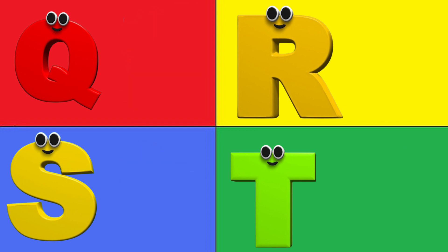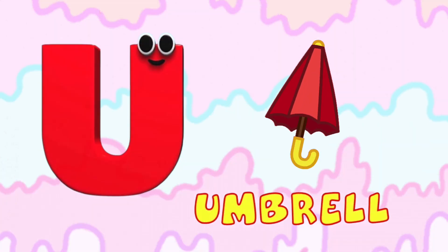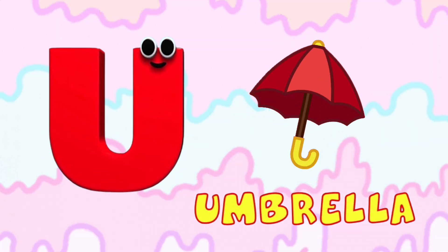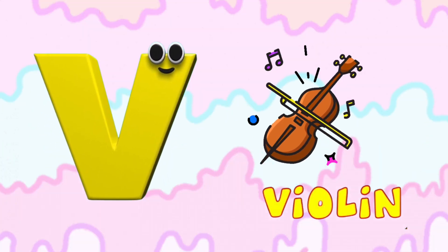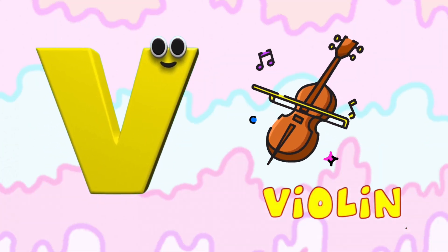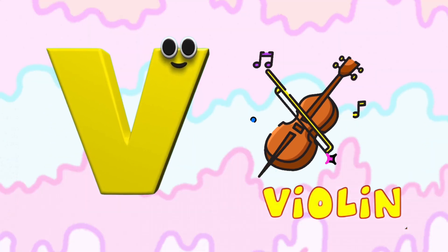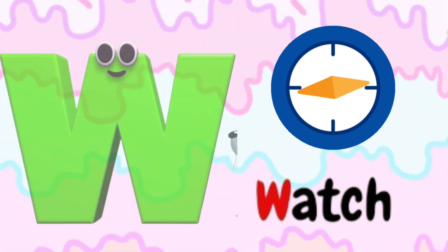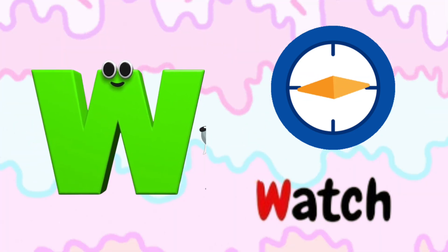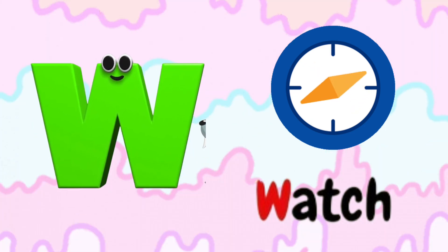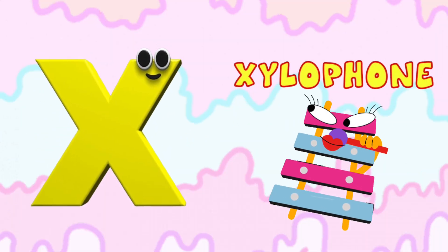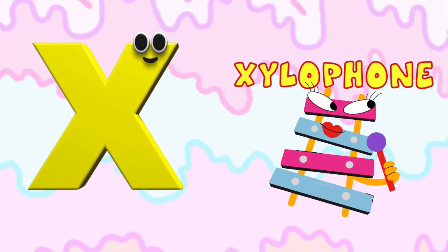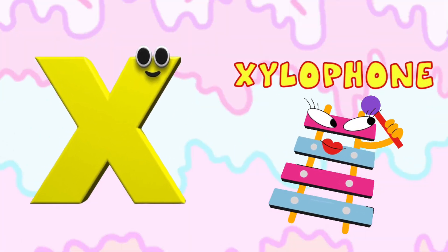U is for Umbrella. U-U-Umbrella. V is for Violin. V-V-Violin. W is for Watch. W-W-Watch. X is for Xylophone. X-X-Xylophone.